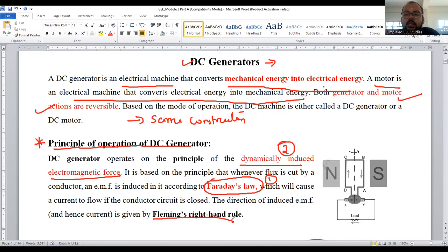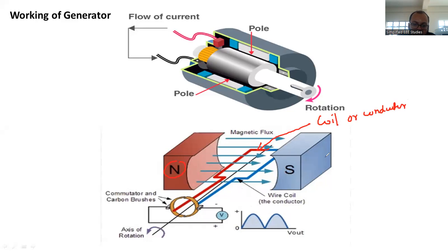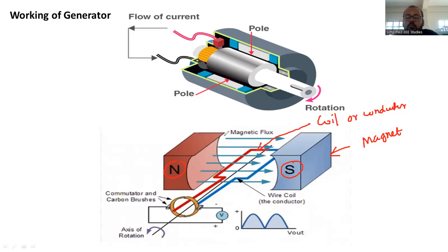Now I'm going to show you a simple diagram of a DC generator. Please consider the diagram. First of all, we require a conductor — we can call it a coil. We can also see the north and south pole; this is your magnet, a permanent magnet. You can also use an electromagnet. The movement of electromagnetic lines of force will always be from the north pole to the south pole, which can be verified by magnetic mapping.